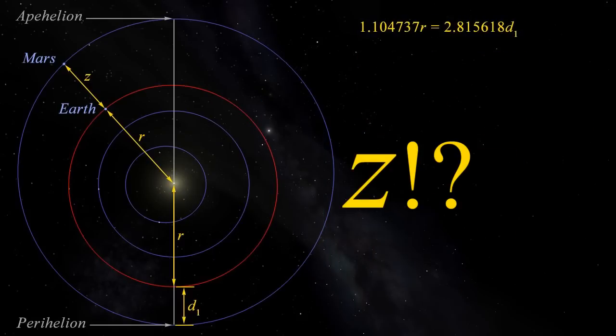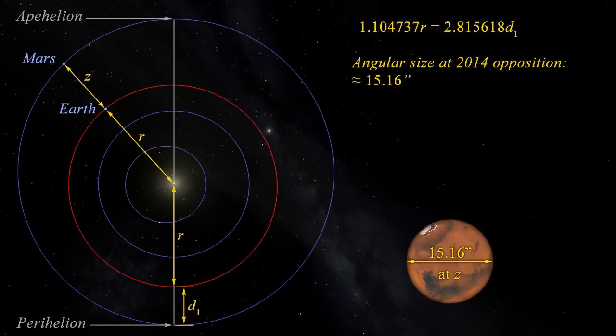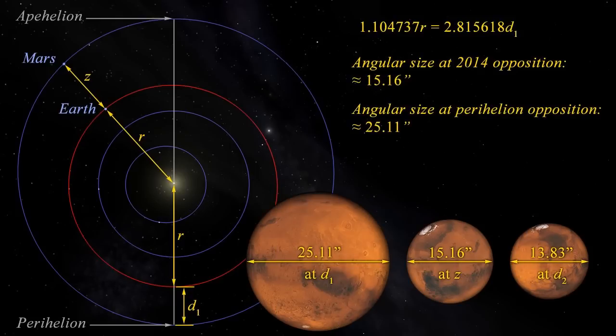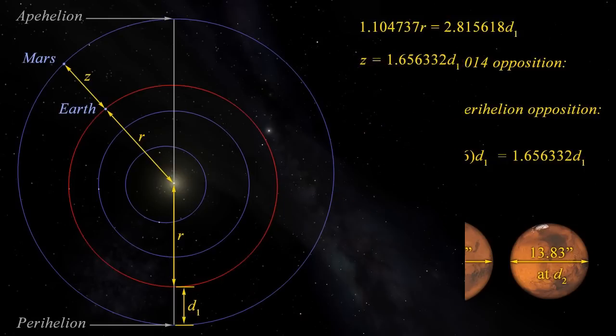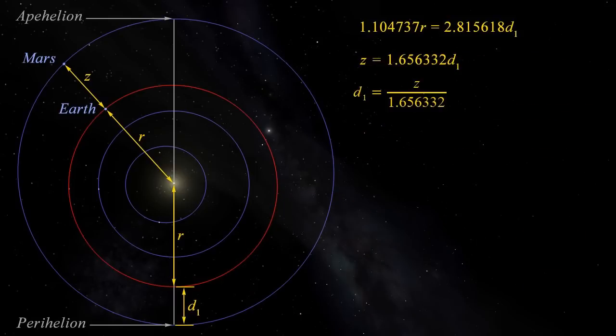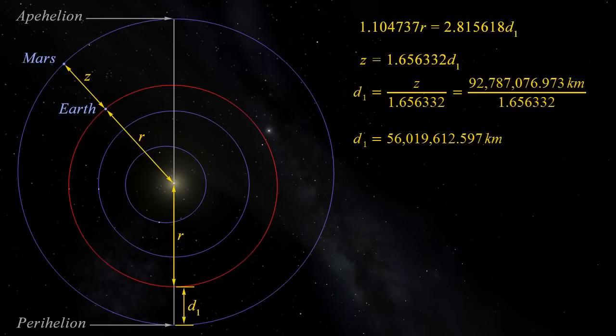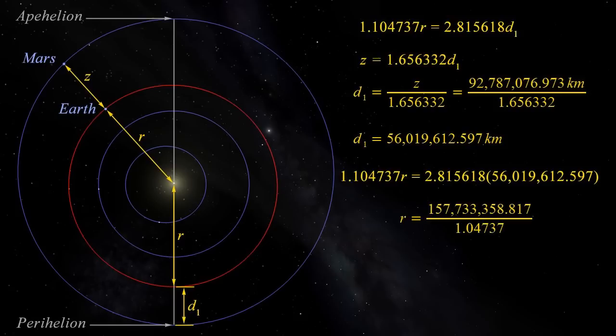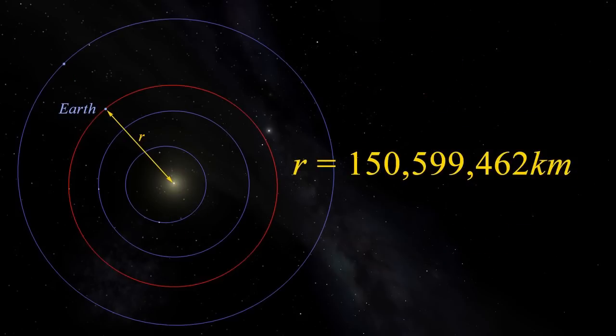Great, but we know z. Not a problem. We also know Alice and Bob measured the angular diameter of Mars to be 15.16 arcseconds. So, just as we worked out the ratio of d2 to d1, we can say that z is 25.11 over 15.16 d1, which is 1.656332 d1. d1 then, is z over 1.656332. Since we know z is 92,787,077 kilometers, this gives us a value for d1 of 56,019,612.597 kilometers. Plug this into our formula, equating r with d, and we find that 1.04737 r equals 2.815618 times 56,019,612.597. Rearrange to find r, and it's 150,599,462 kilometers.